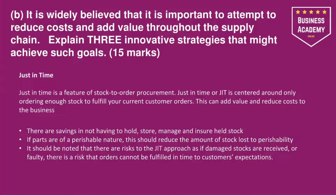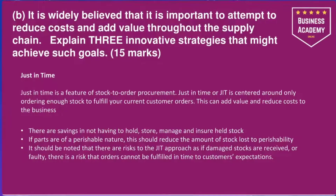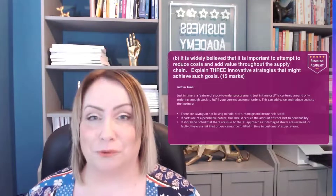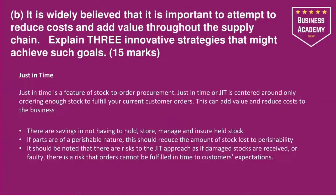Another area to discuss is just in time. Just in time is a feature of stock-to-order procurement — basically, where you make to order. JIT is centred around only ordering enough stock to fulfil your current customer orders, and this can add value and reduce cost to the business. There are savings in not having to hold, store, manage or insure all of this stock. If parts are perishable, this reduces stock lost to perishability, as goods arrive just in time — neither too early nor too late. However, if damaged or faulty stock is received, there's a risk you can't meet customer orders, so holding very little stock is a significant risk.